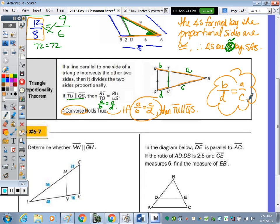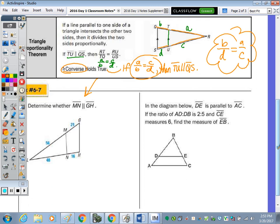Before we do number six, let's practice using this theorem. It says in the diagram DE is parallel. And the ratio of AD to DB is 2 to 5. If CE measures six, what's EB? Well 6 is how many times as large as 2? 3. So therefore, 3 times 5 is 15. So BE equals 15.